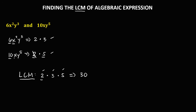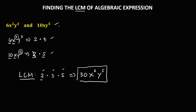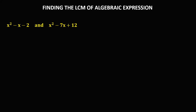For the variables, just copy the highest exponent. That's x to the power 3, and for y, that's y to the power 5. So this is now the LCM of this expression.